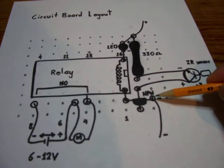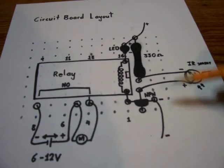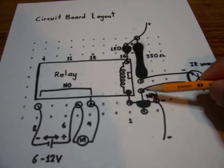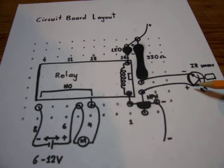The emitter of the transistor is connected to the ground of a 9 volt battery. The base of the transistor is connected to the emitter of the infrared detector.